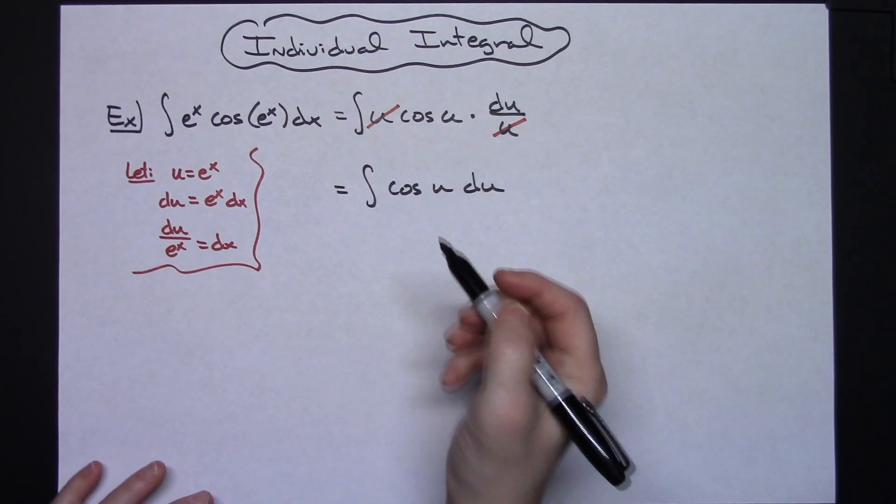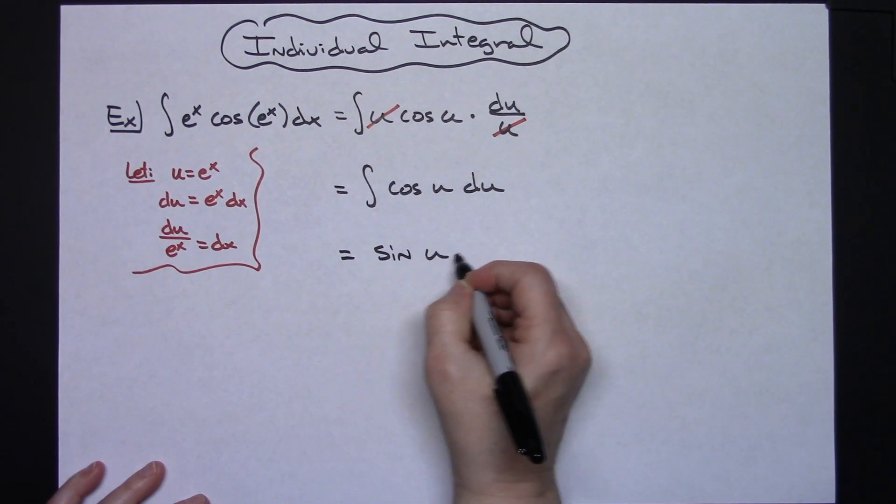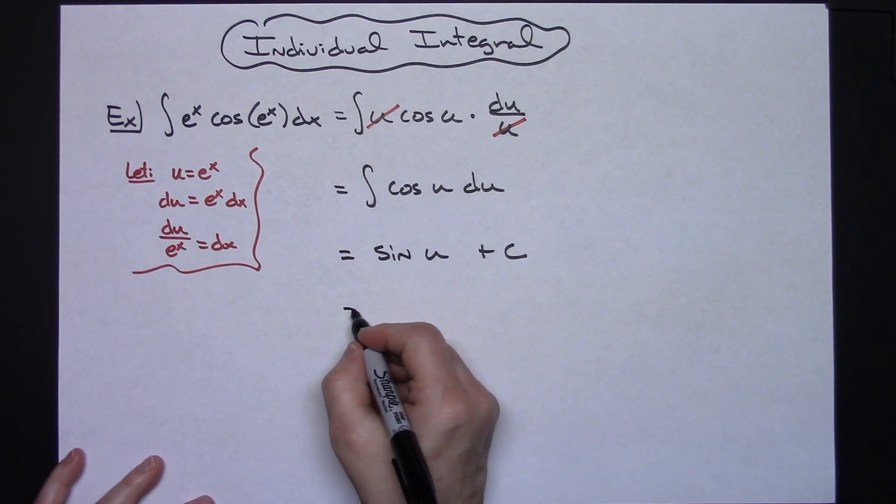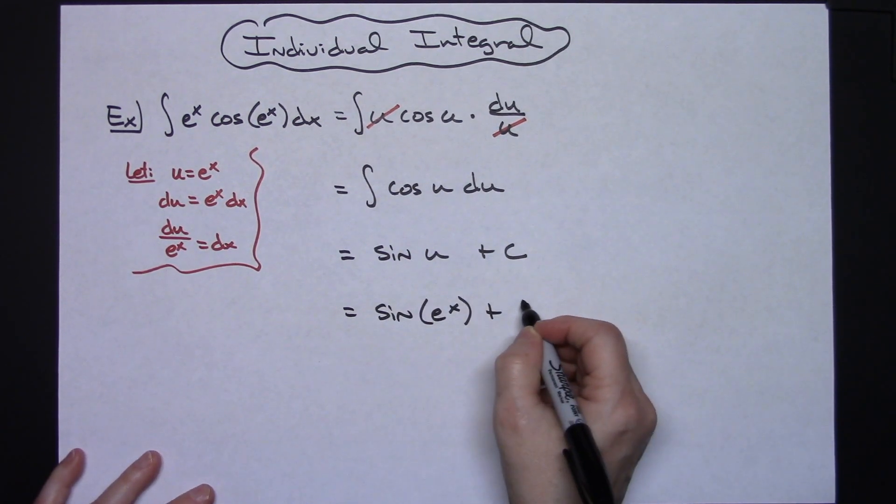And when you integrate cosine you get sine, so this is going to be sine u plus c. And then you can replace that u with what you originally said it was going to be equal to, so sine e to the x plus c.